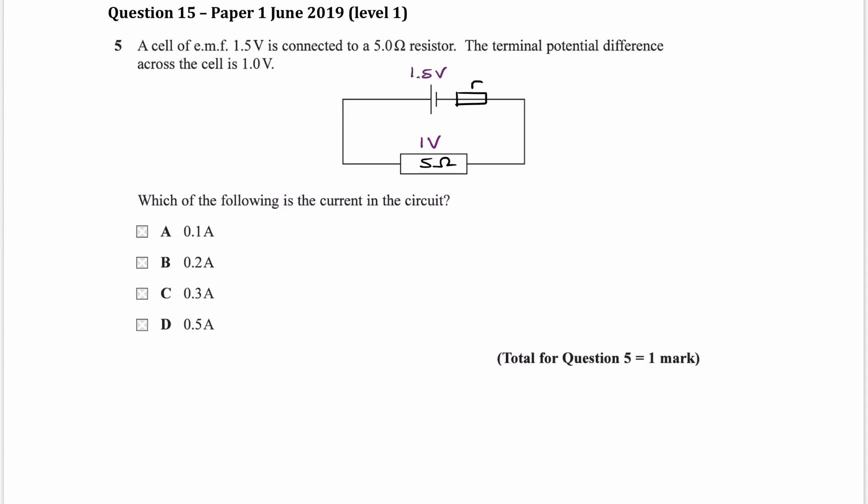And the question is, what is the current in the circuit? So as we know this resistor and the voltage across it, we can use those two things to work out the current.